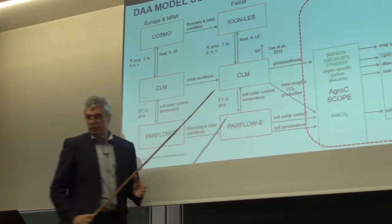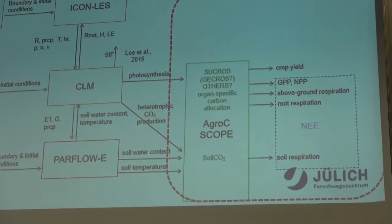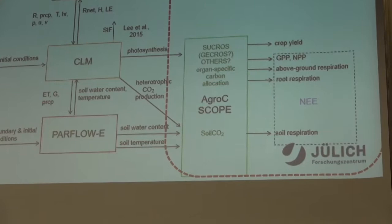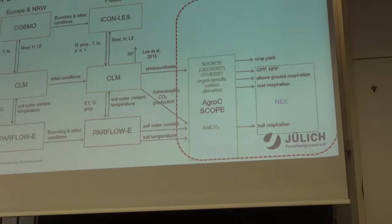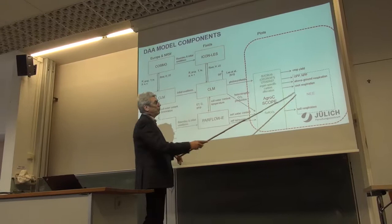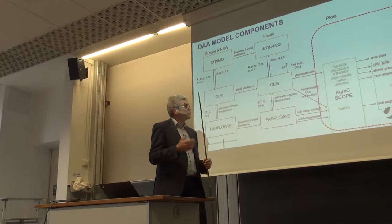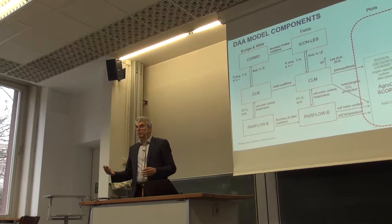At this scale, crop growth models can provide information on gross primary production, above-ground respiration, crop yield, subsurface biomass, and more.